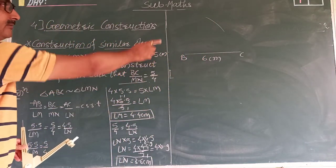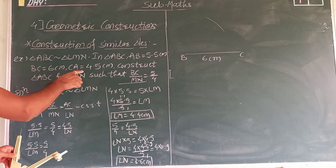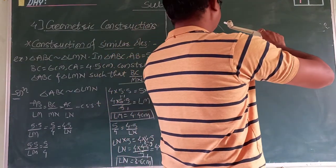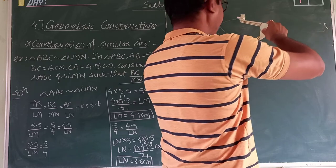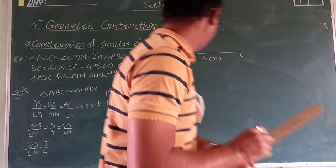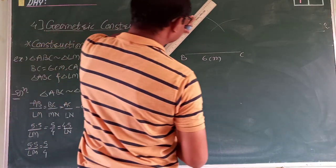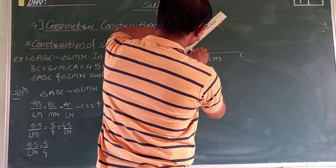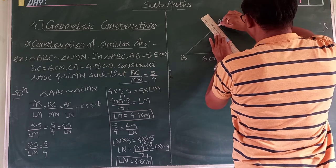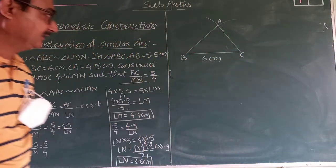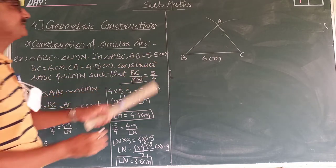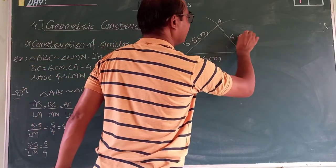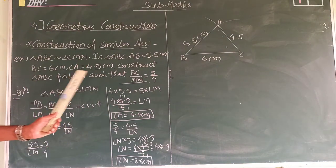Now take AC equal to 4.5 centimeters. Using the scale, set the compass to 4.5 centimeters and from point C draw another arc. These two arcs intersect each other, and that intersection point is A. Using the scale, join AB and AC. Write the measurements: AB is 5.5 centimeters and AC is 4.5 centimeters. The first triangle ABC is now constructed.